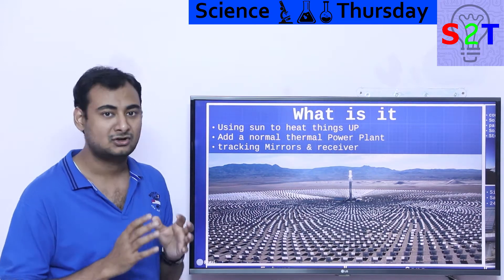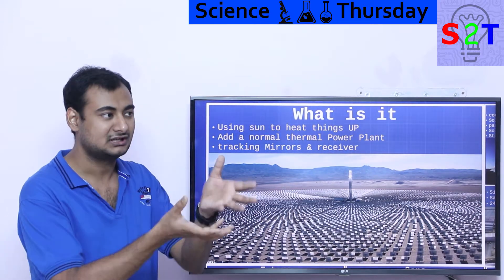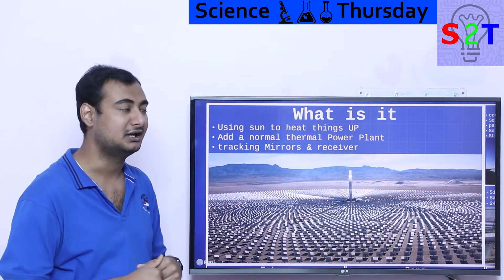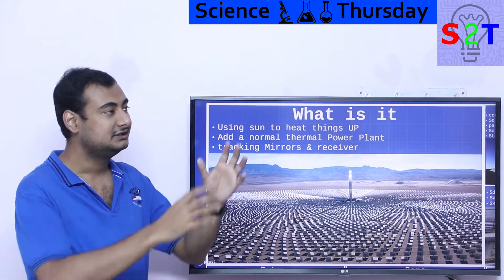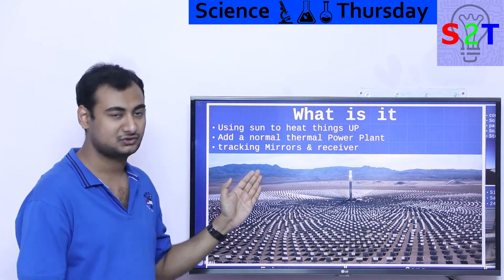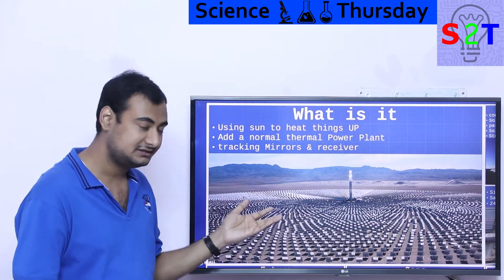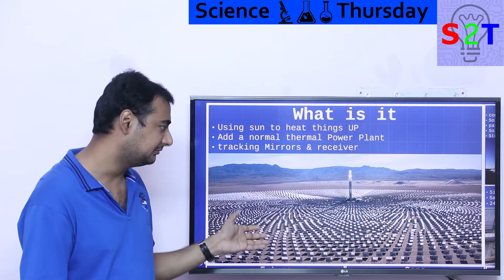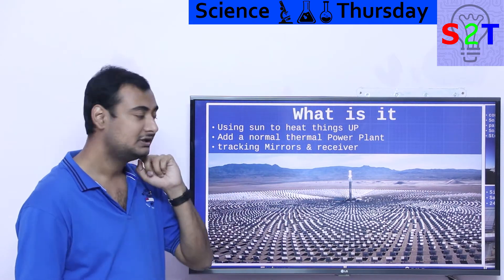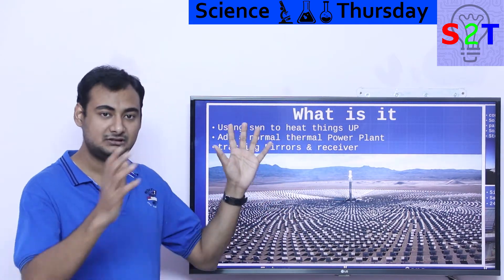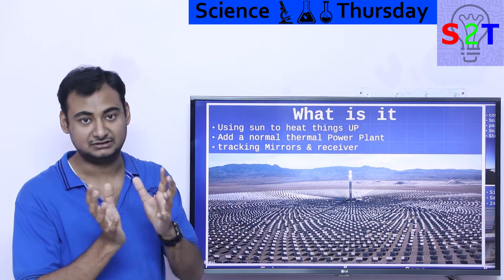Now, because the sun is not a static source — it's not like a reactor where you know where it is — it moves. So you need something that can track it. Either the receiver has to move around or the mirrors do. Generally, people move the mirrors.